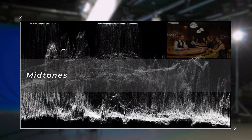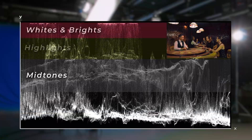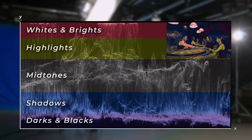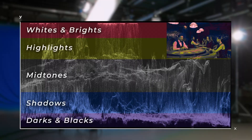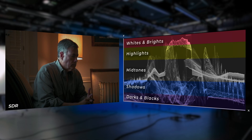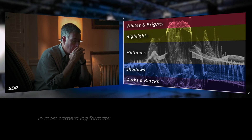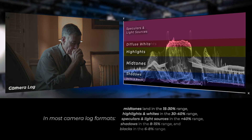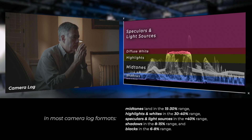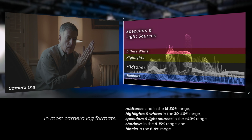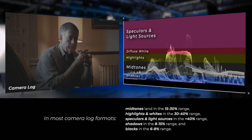In SDR, we know that our mid-tones land in the middle region of the signal, our whites are at the top, and our darks are at the bottom. But that's not exactly how HDR works. For most camera signals, mid-tones land in the 15–30% range, whites in the 30–40% range, and speculars and ultra-brights in the areas above that.